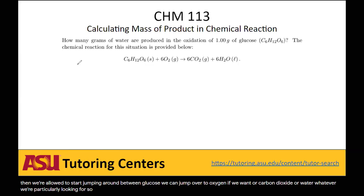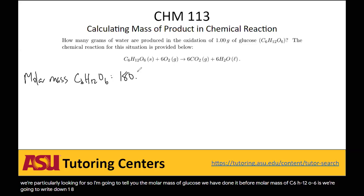So I'm just going to tell you the molar mass of glucose. We have done it before. Molar mass of C6H12O6 is 180.18 grams per mole. That is the molar mass of glucose.